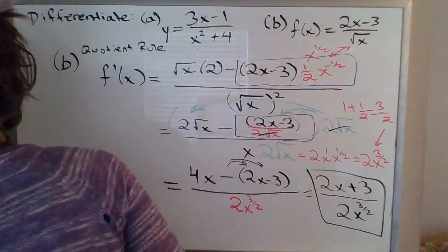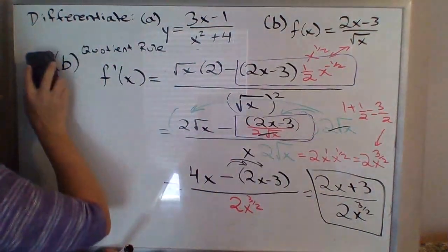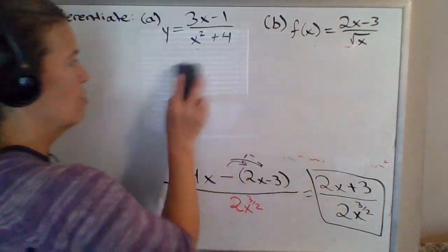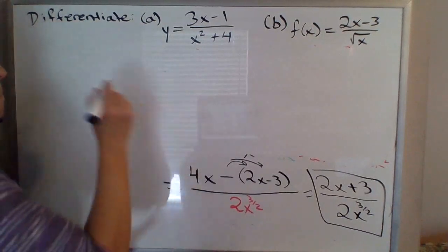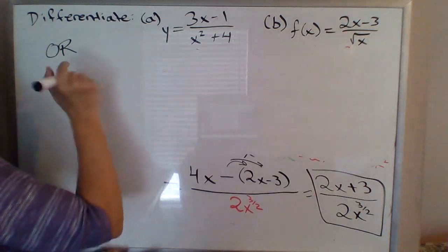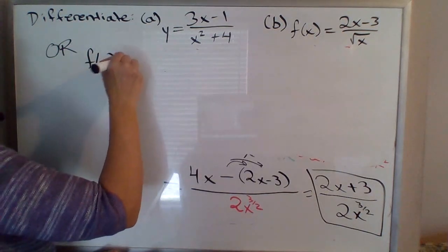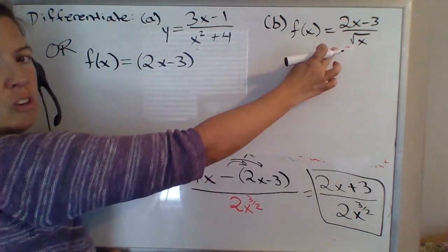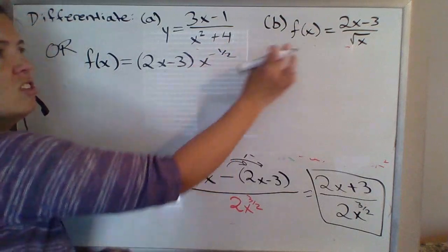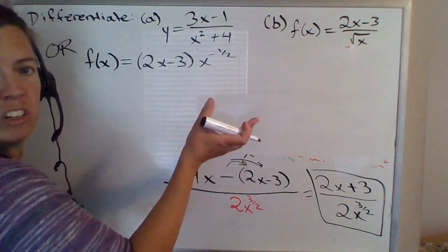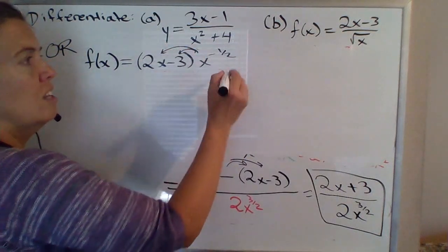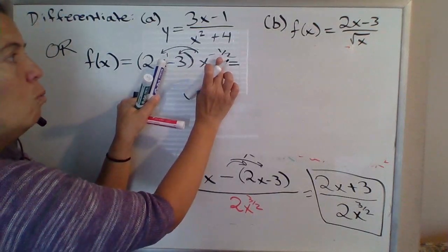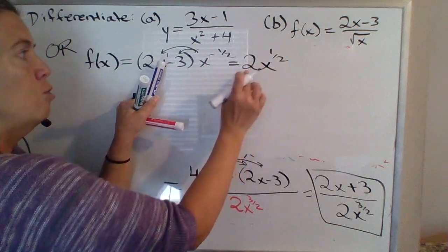Now, I mentioned there's another way to do this. When you have a single term in the denominator like that, another way to handle this is to bring that x to the 1 half up and express it as x to the negative 1 half, then distribute. So that'd be 2x to the first times x to the negative 1 half — you add those exponents, 1 minus 1 half gives 1 half — so 2x to the 1 half, minus 3 times x to the negative 1 half.